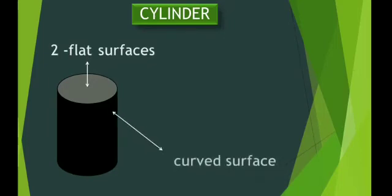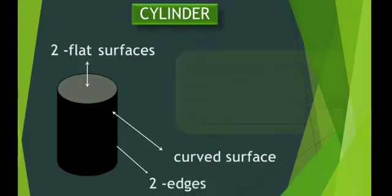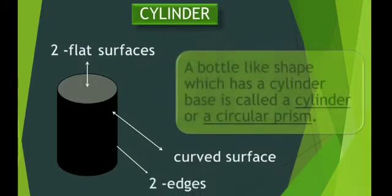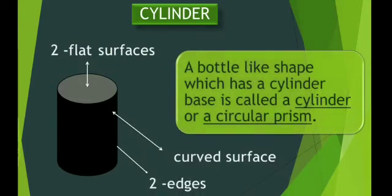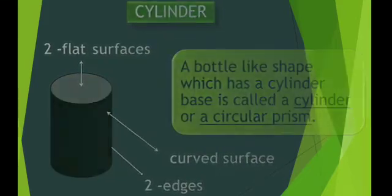Now what is a cylinder? A cylinder has two flat surfaces, one at the top and the other one at the bottom, one curved surface and two edges. A bottle-like shape which has a cylindrical base is called a cylinder or a circular prism.